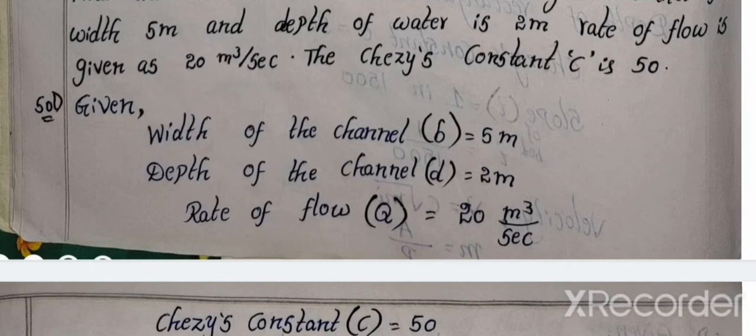Water width channel is 5 meters, channel depth 2 meters, rate of flow is given as 20 meter cube per second, so rate of flow, nothing but discharge, is 20 meter cube per second. The Chezy's constant C is 50.